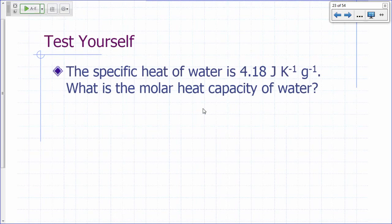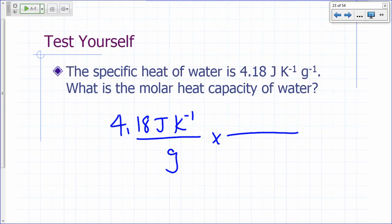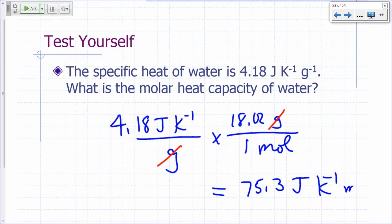Specific heat of water is 4.18 joules per kelvin per gram. What's the molar heat capacity of water? How would you do this? You just say 4.18 joules per kelvin per gram. How do I change it to per mole? One mole of water is how many grams? 18.02 grams. So what's 4.18 times 18.02? 75.3 joules per kelvin per mole.